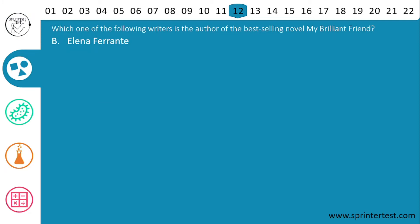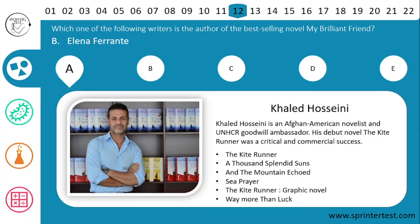Let's look at all these authors. First, Khalid Hosseini is an Afghan-American novelist and UNHCR goodwill ambassador. His debut novel The Kite Runner was a critical and commercial success. After that he wrote A Thousand Splendid Suns, And the Mountains Echoed, Sea Prayer, and the Kite Runner graphic novel, along with many other books.